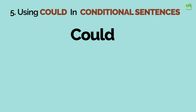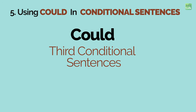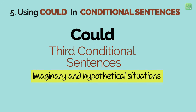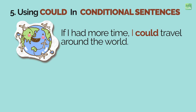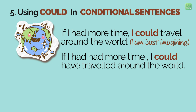And lastly, let's understand how to use could in conditional sentences. Could is mostly used in third conditional sentences — situations that are imaginary or hypothetical. 'If I had more time, I could travel around the world.' Do I have the time? No, I don't — I am busy; it's just an imagination. Note this sentence is in the present tense. Now let's say the same sentence in the past: 'If I had had more time, I could have travelled around the world.' Again, it's just an imagination. Notice the verbs: there is a had followed by another had, and the verb after could is in the third form — travelled.